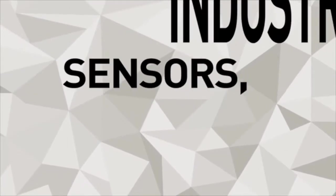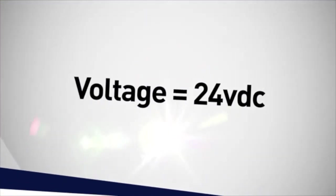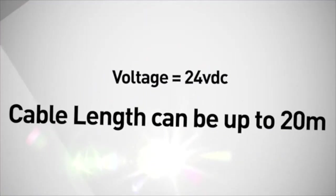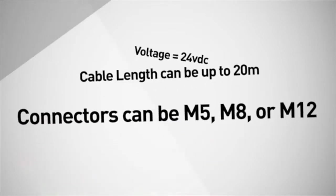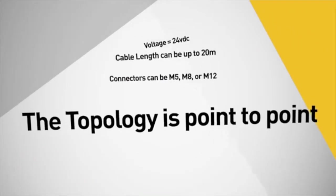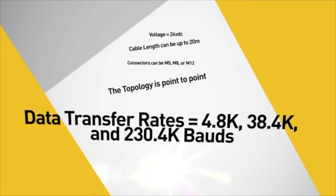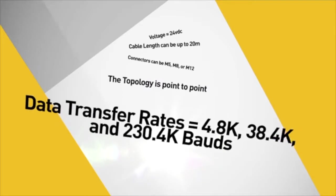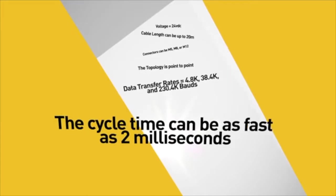Applications include industrial sensor, actuators, PLCs, and remote IO. Voltage equals 24 VDC. Cable length can be up to 20 meters. Connectors can be M5, M8, or M12. The topology is point to point. Data transfer rates equal 4.8K, 38.4K, and 230.4K baud. The cycle time can be as fast as 2 milliseconds.